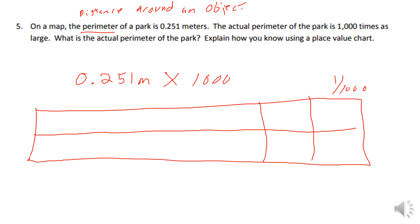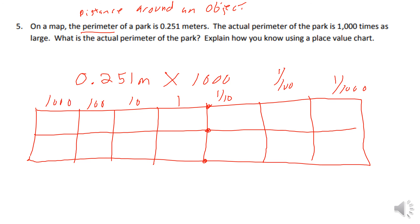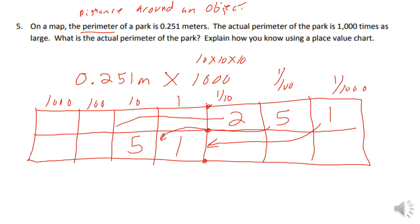Using a place value chart starting at thousandths: thousandths, hundredths, tenths, ones, tens, hundreds, thousands. I place 251 thousandths into the chart. Multiplying by 1,000 — 10 times 10 times 10 — means three place values of movement. The 1, the 5, and the 2 each shift three places. So 251 thousandths times 1,000 equals 251 meters.